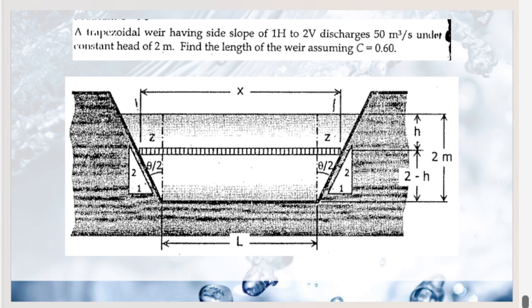Now let's move to Problem 3: a trapezoidal weir having a side slope of 1 horizontal to 2 vertical, discharging at 50 cubic meters per second under a constant head of 2 meters. Find the length of the weir assuming C = 0.6. From the illustration, the trapezoidal weir has a base length L and inclined sides. The slope is 1:2, meaning tangent(θ/2) = 1/2. We take a horizontal strip to set up the integration.